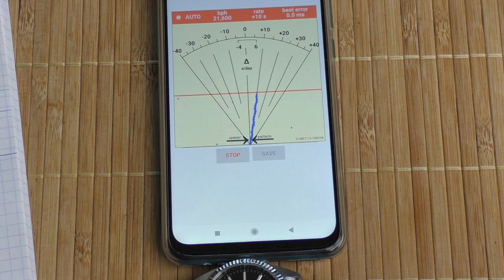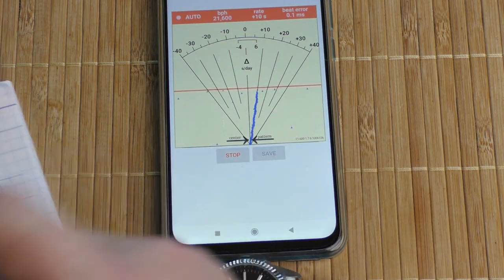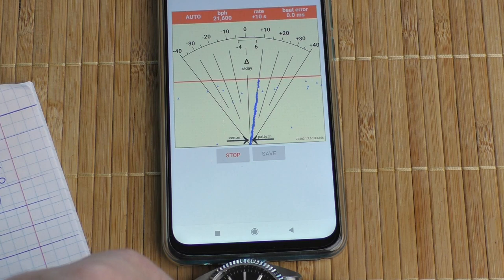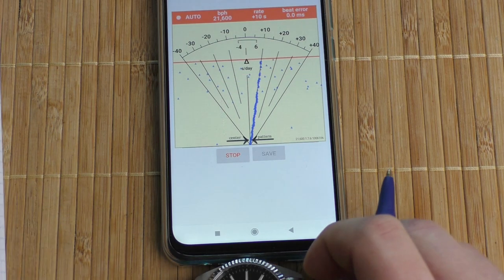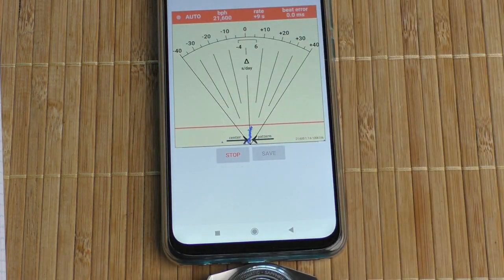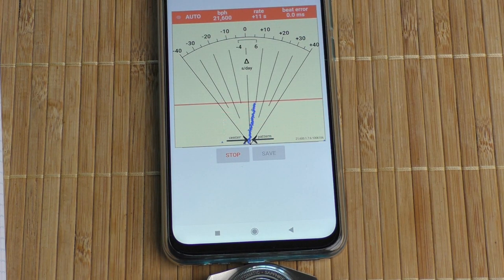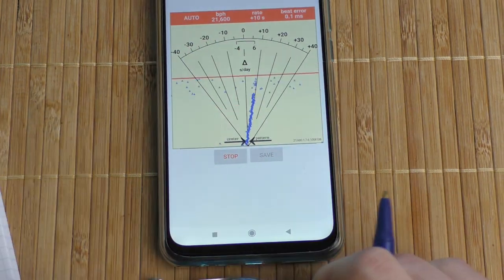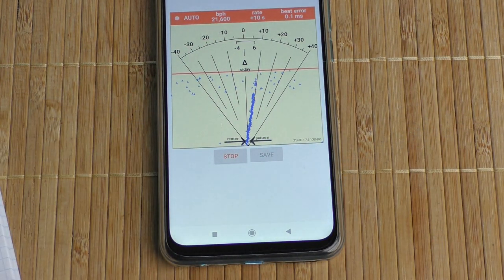Okay, writing that down, plus 10 seconds and zero beat error. Okay, let's flip it upside down. Plus 11 seconds and zero beat error, not bad at all, not bad. Miyota movement going well.